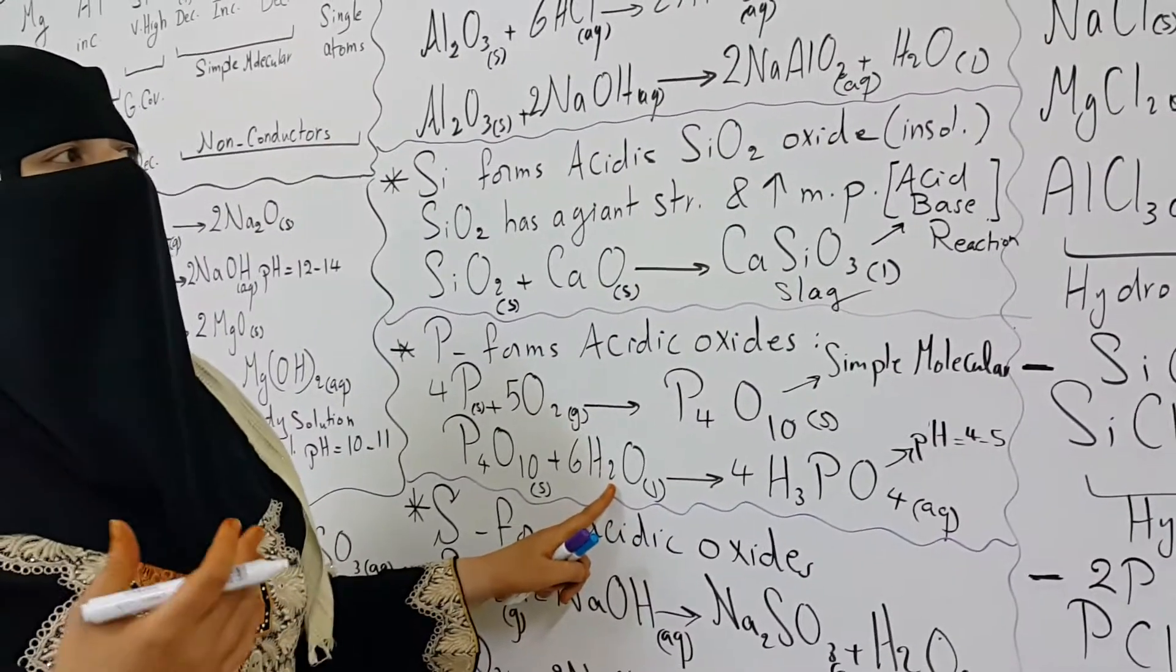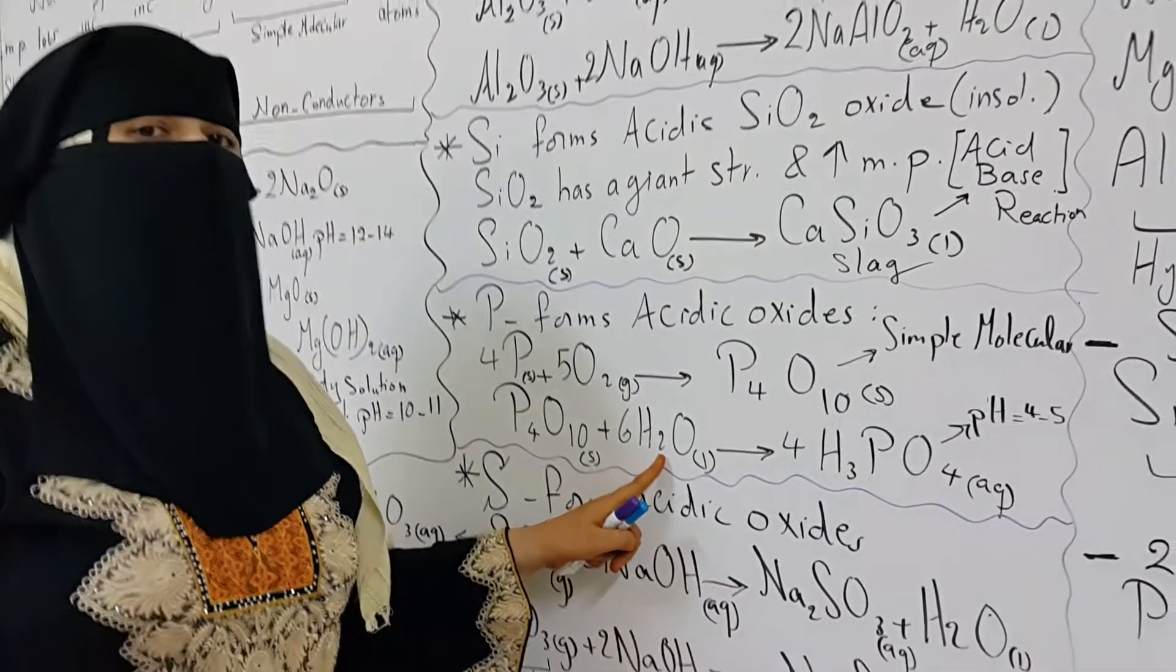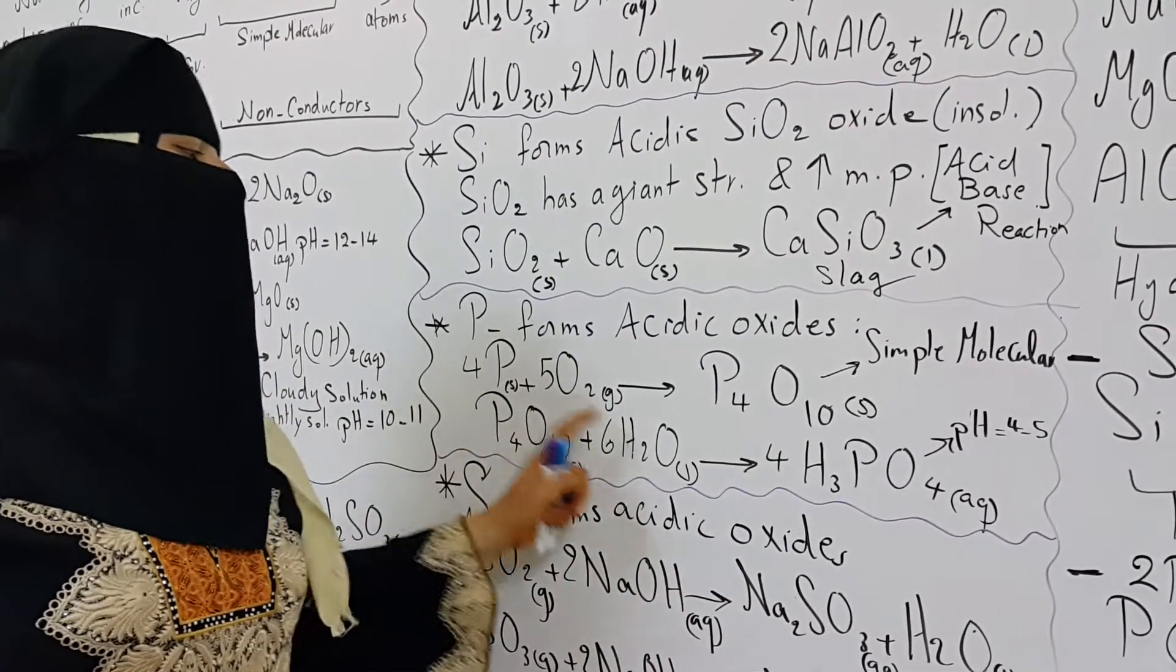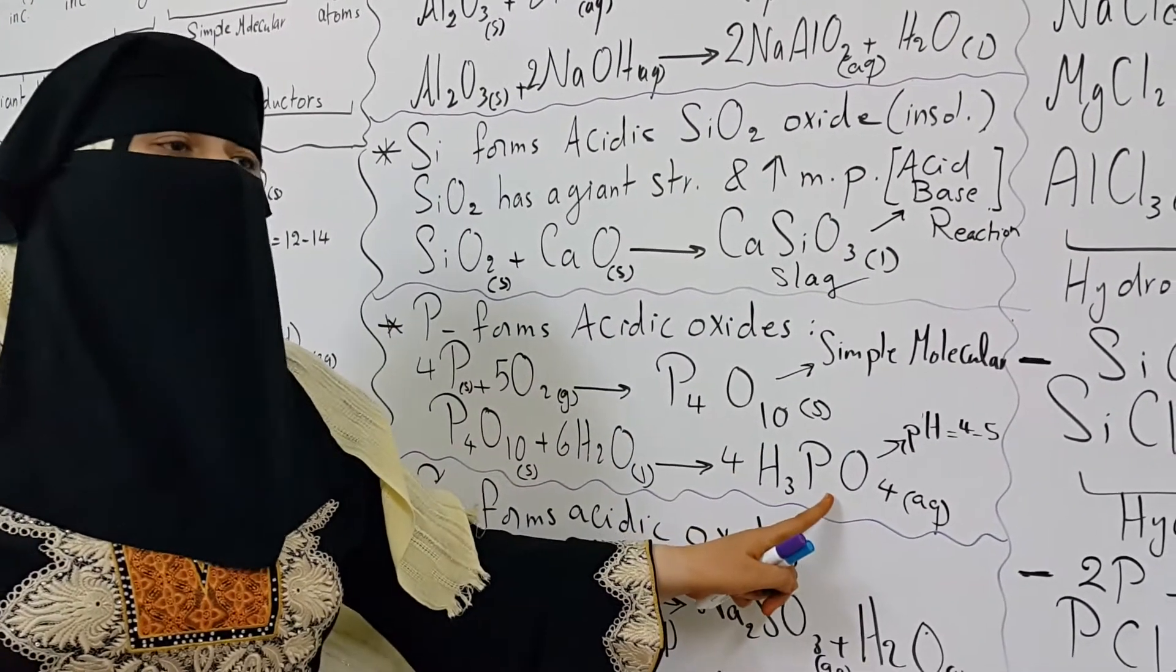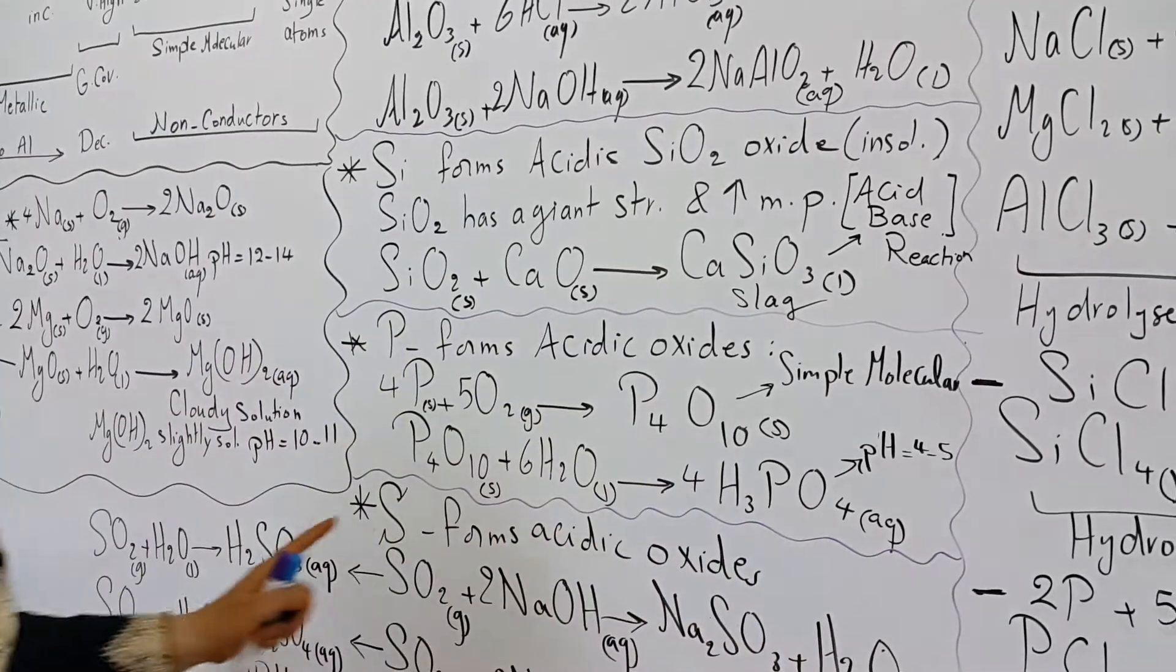It's not solubility. Solubility when you dissolve something without forming a new product. But here, you react the substance with water to give a new product, which is phosphoric acid. So this is called hydrolyzes.